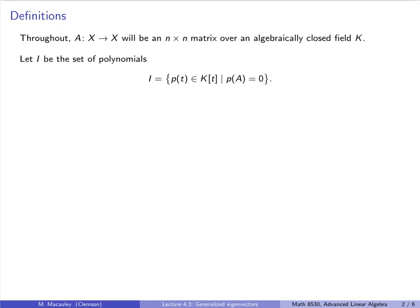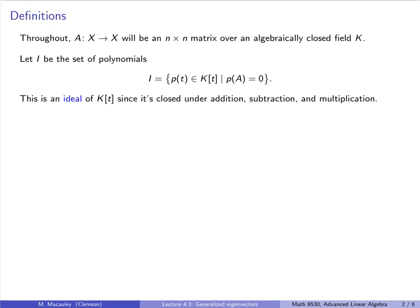Let I be the set of polynomials over K such that P of A equals 0. We will say that these polynomials vanish on A, or that A vanishes on the polynomials. What I don't want to say is that A is a root of the polynomial, because linear maps and matrices are not roots of polynomials — numbers are. We are using the letter I to denote this set because technically it is an ideal of the ring of polynomials over K.